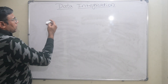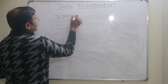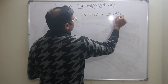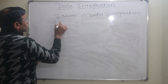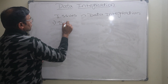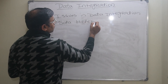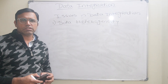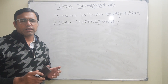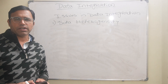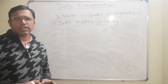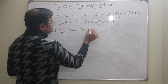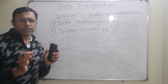The first issue in data integration is data heterogeneity. Heterogeneous data means data which is in different formats. Since the data is coming from different sources, there is data heterogeneity — having different semantics and syntax. Combining all this data at one place is one of the major issues in data integration.